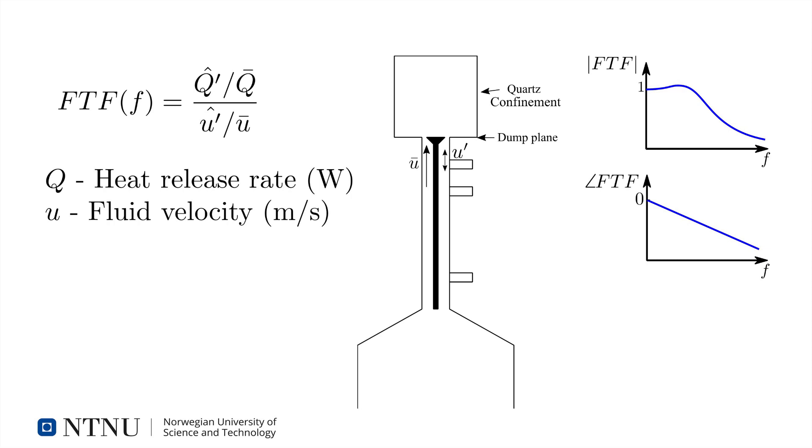Predicting the FTF is very difficult, and it usually needs to be directly measured in the lab. We'll now describe some of the necessary equipment to measure an FTF for the burner geometry drawn on the screen. This is an axisymmetric burner, and the flame is stabilised by recirculation zones above the dump plane, which is used as the reference position for the velocity.